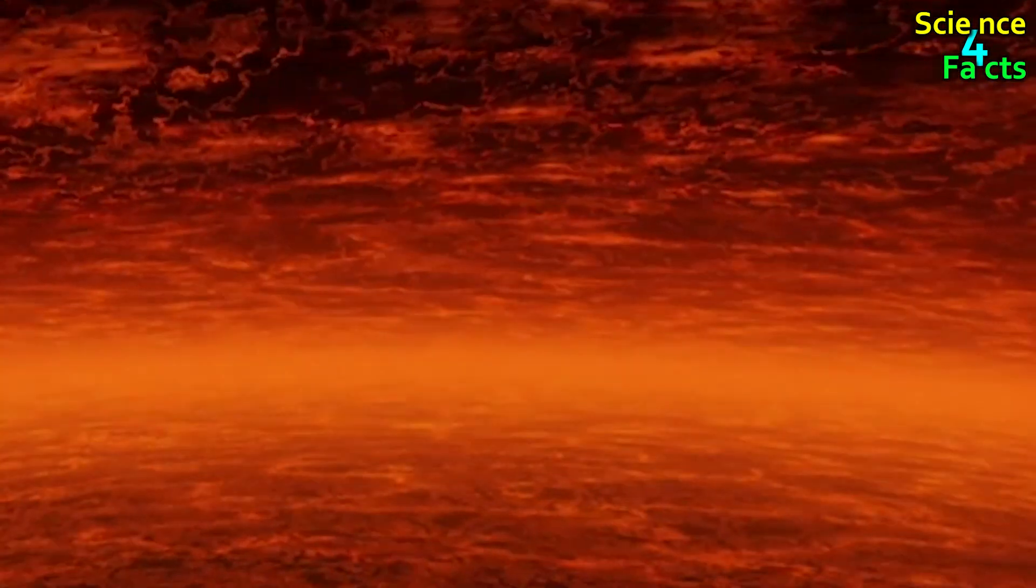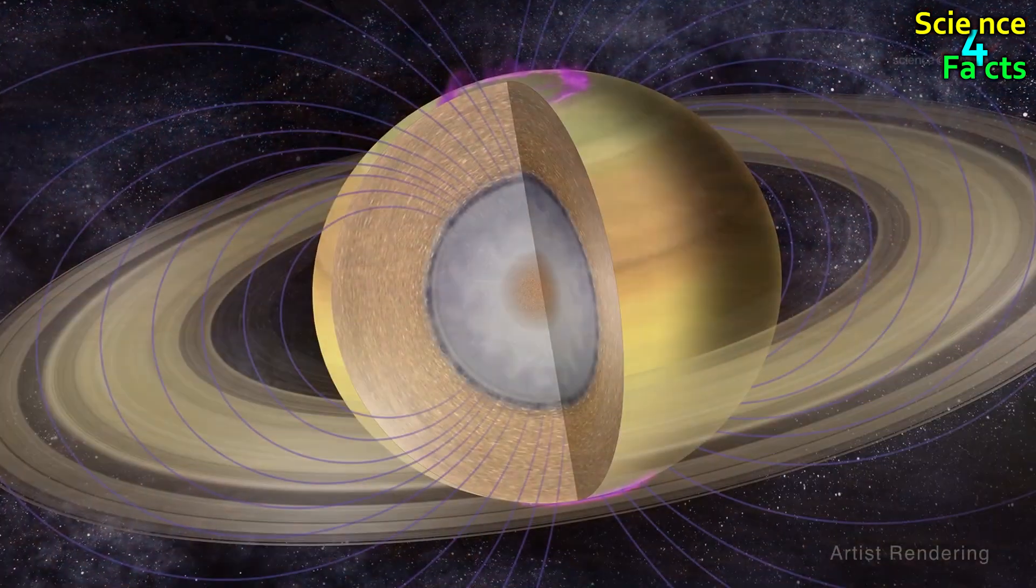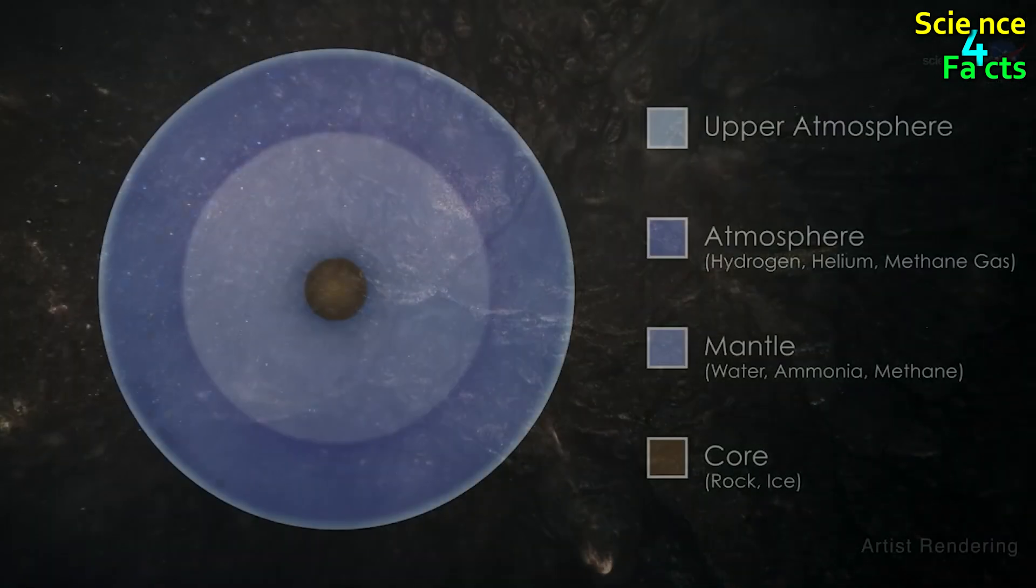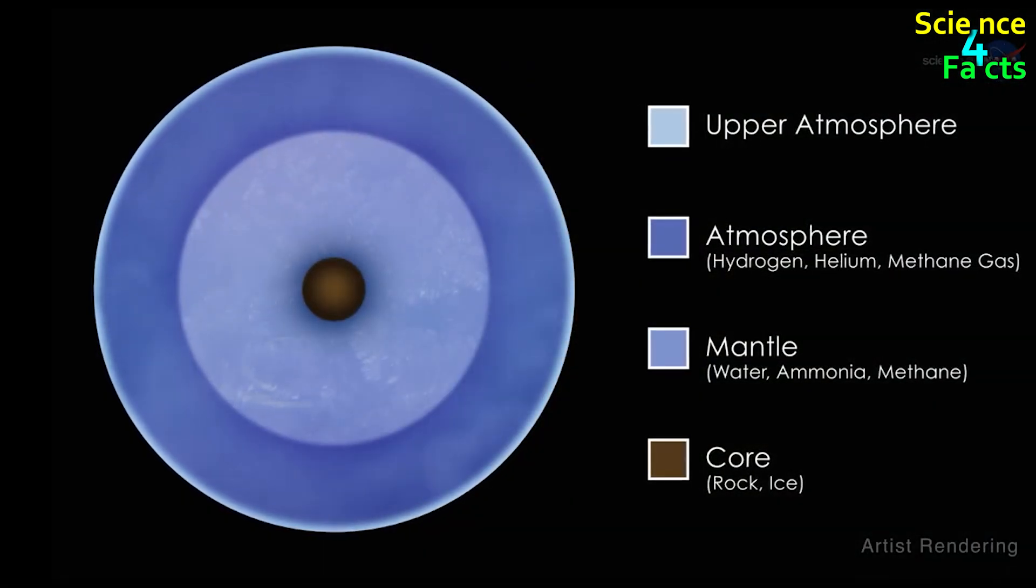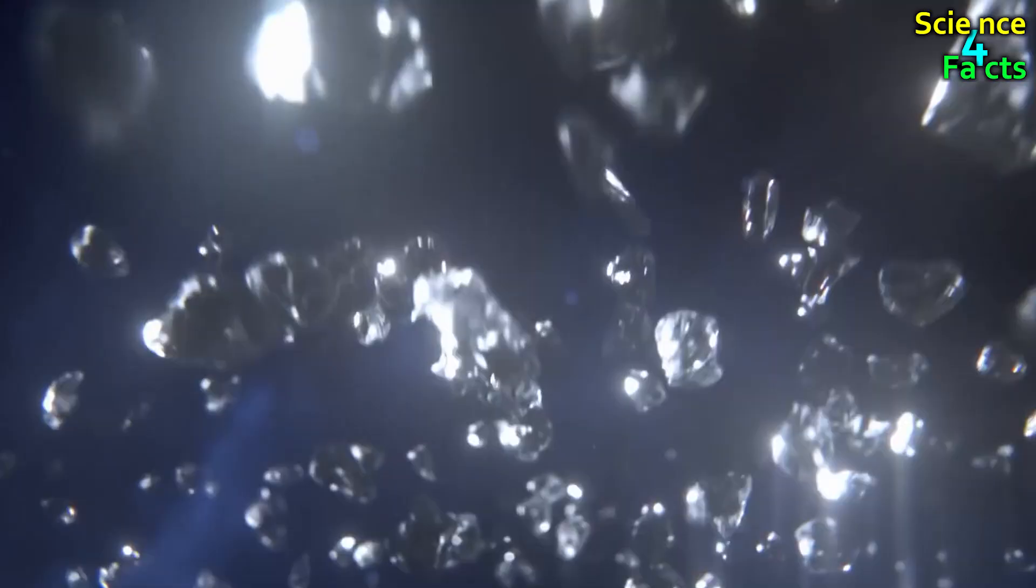Due to the intense temperature and pressure in the cores of Jupiter and Saturn, the entire falling diamond becomes liquid and floats around the core. But the cores of Uranus and Neptune are cold, so all the diamonds that fall there are in solid form. That means that the core of these four planets will be full of raining diamonds.